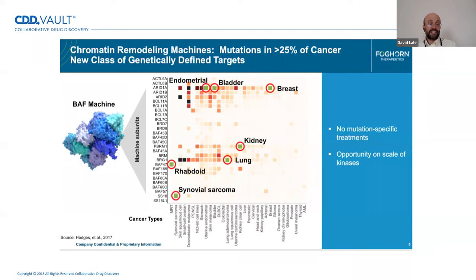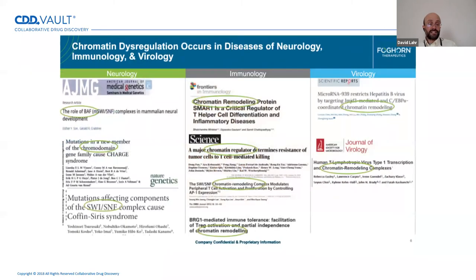We recognize this is not just limited to cancer. There's a lot of literature about how chromatin regulation may be responsible for diseases in other areas such as neurology, immunology, and virology. We're actively starting to explore how we can develop therapies in those areas as well.